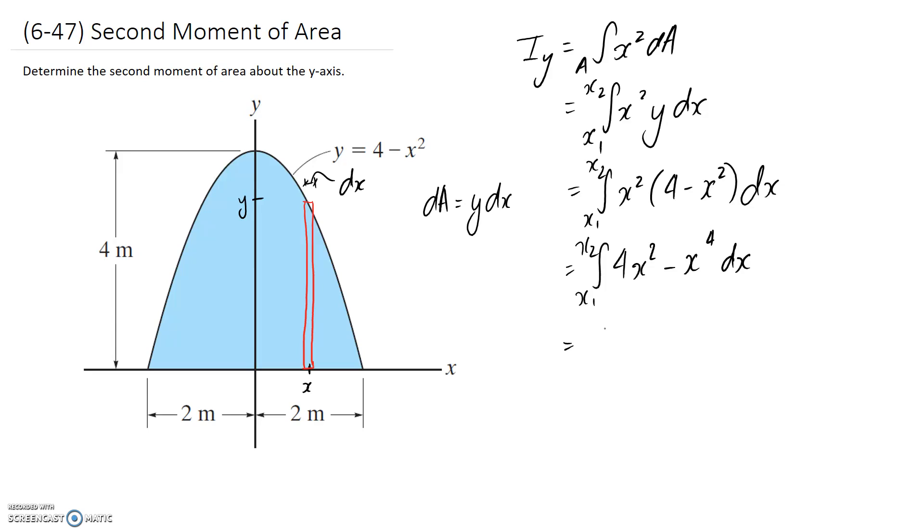So it's going to become 4x squared minus x to the power of 4. And applying my integration rules, my constant of 4 stays out the front. I add 1 to the power, so it becomes x to the power of 3, and I divide by the new power. Doing the same thing for this one: I add 1 to the power and then divide by that new power. And it's a definite integral, so I need to transfer my integration bounds.